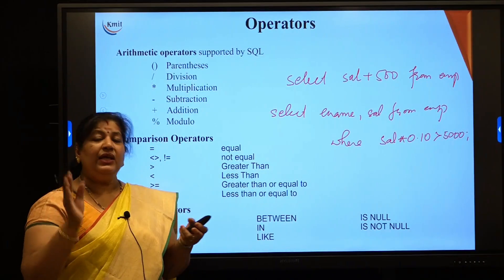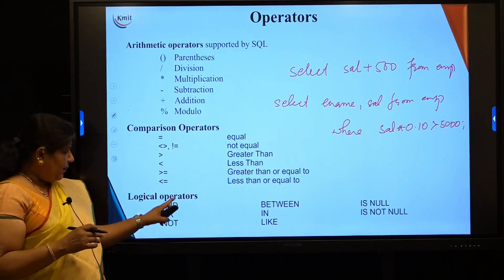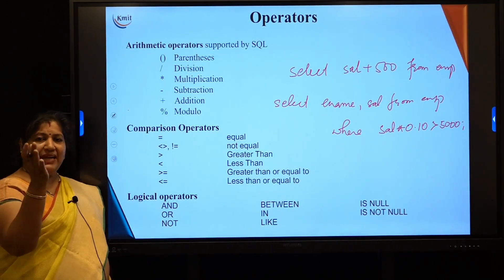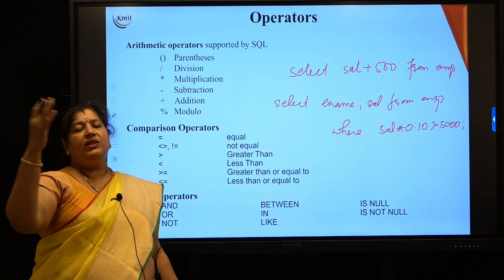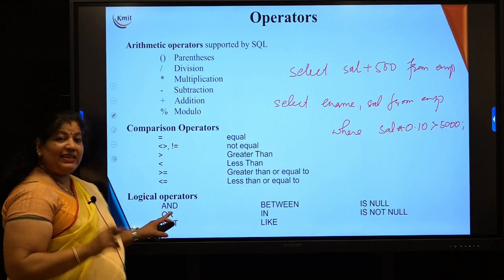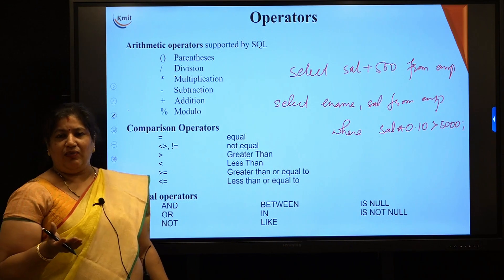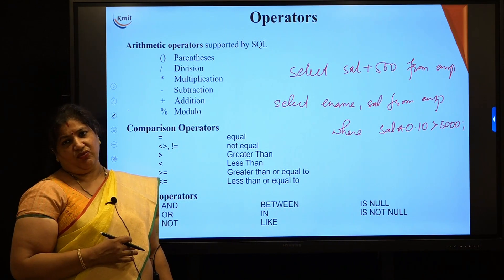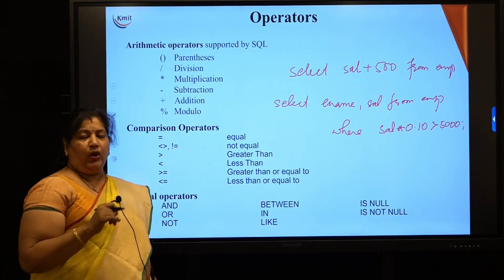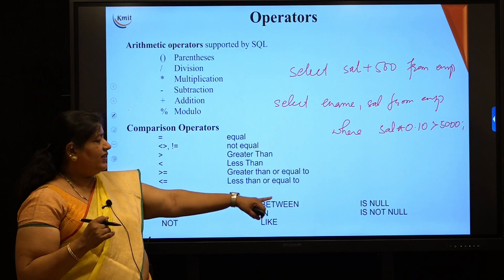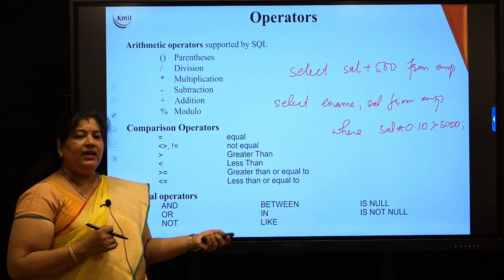Several conditions can be combined using the logical operators AND, OR, or NOT. AND joins two conditions — both must return true for the overall result to be true. OR requires at least one condition to be true. NOT reverses the returned value: if the result is true, NOT makes it false.